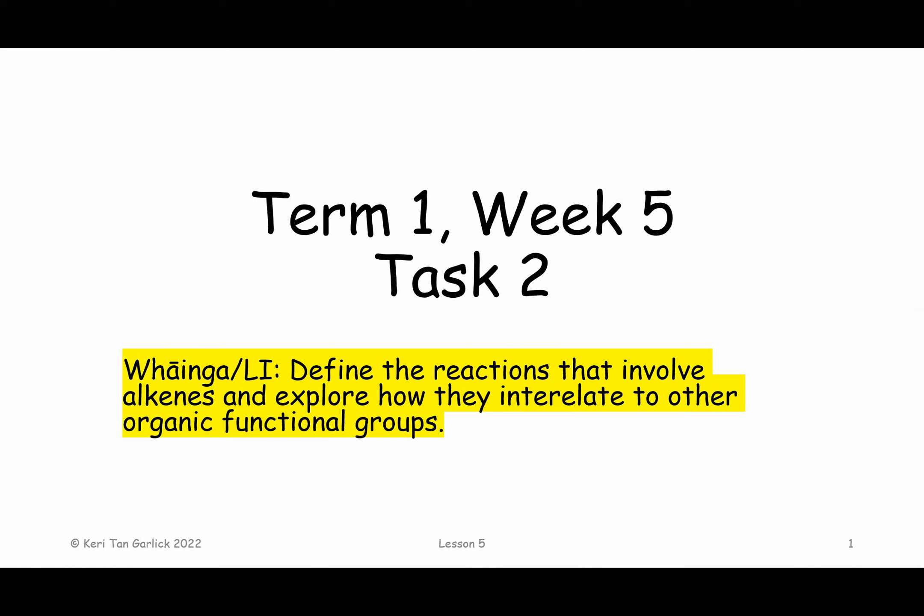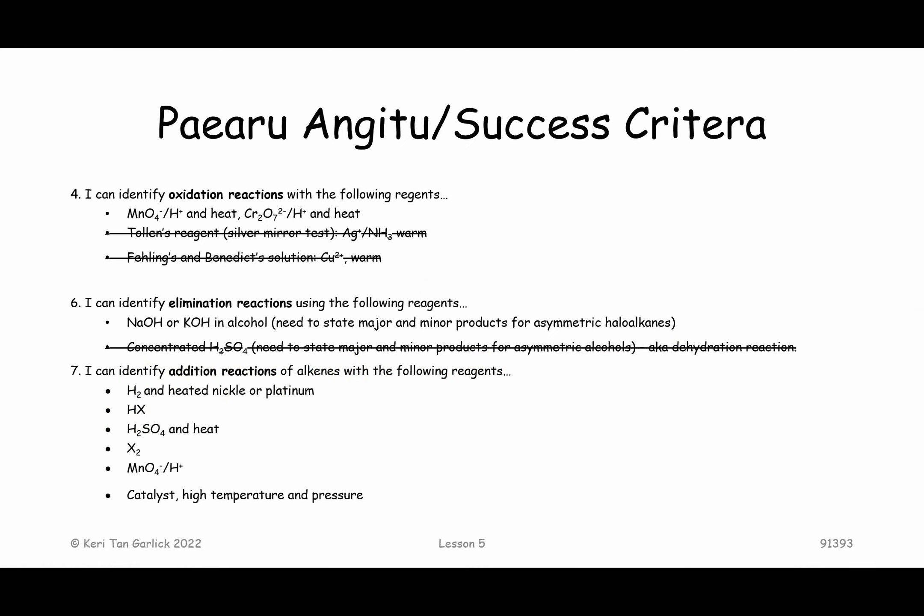Kia ora. Here is task two for week five of remote learning. Today we are continuing on with the alkene work, but we are starting to look at the chemical reactions that the alkenes do. This is really important because now we can start seeing more of that interrelationship of the organic functional groups and how we can go from one to another. They're basically really good to help you set up for the various types of organic chemistry questions.